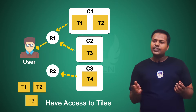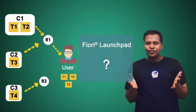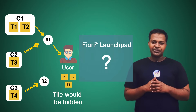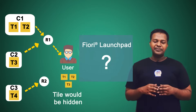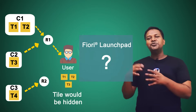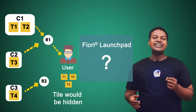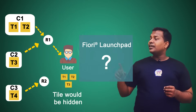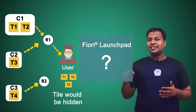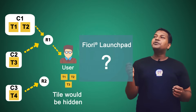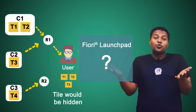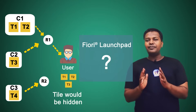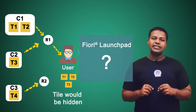So what tiles will the user see in the Fiori launchpad? The answer is: the user will not be able to see any tiles, even though they have access to T1 and T2 from catalog C1 and T3 from catalog C2. The tiles T1, T2, and T3 will be present but hidden, because we are missing one critical thing — and that critical thing is groups.